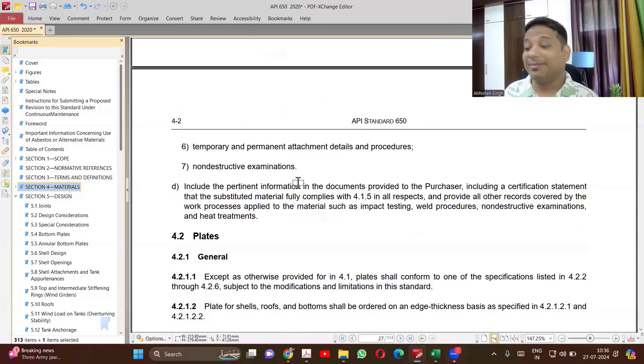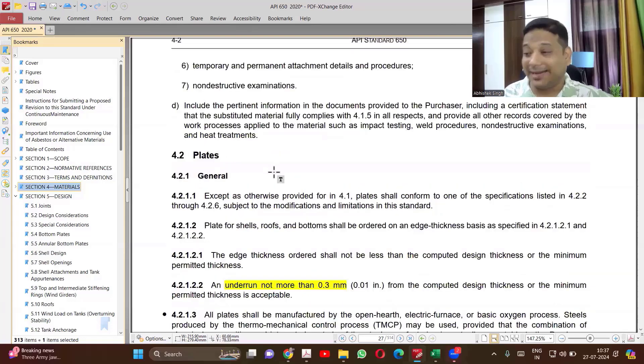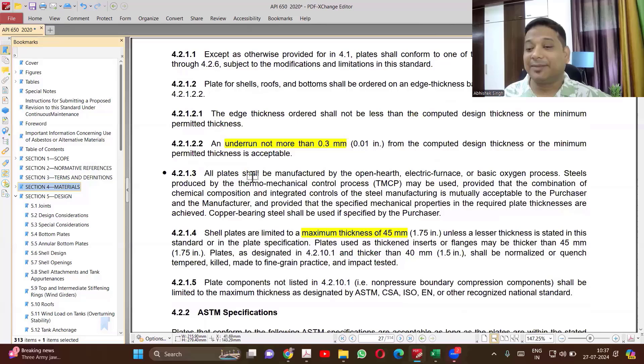Under tolerance, if you are reading about the requirements related to materials, first is plate. So whenever you are procuring plate, under tolerance 0.3 mm, which is same as ASME, that is permitted.